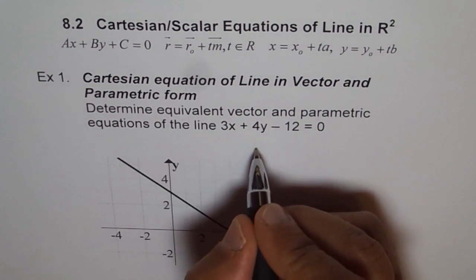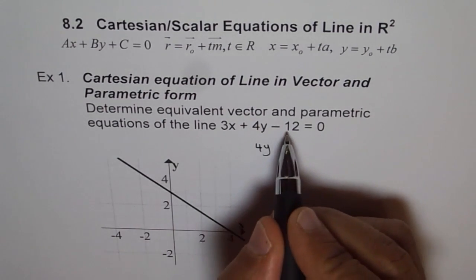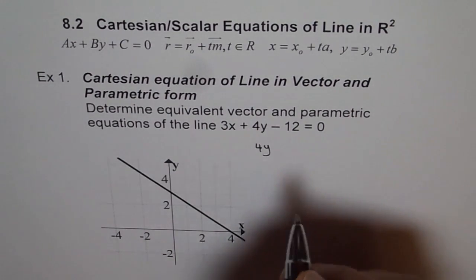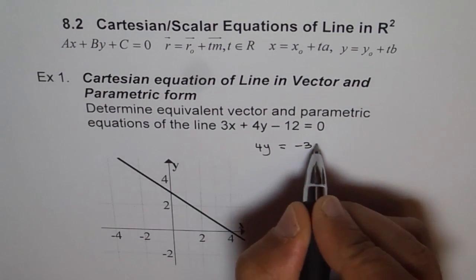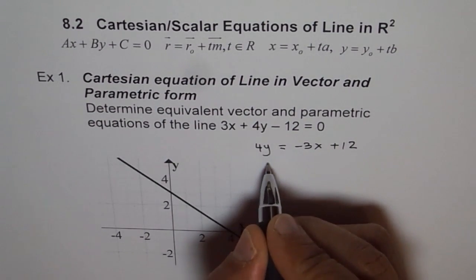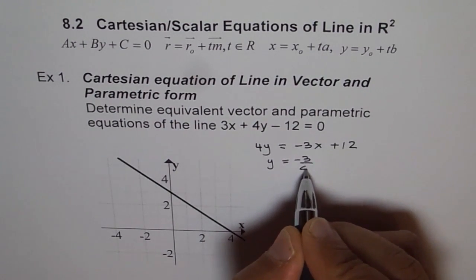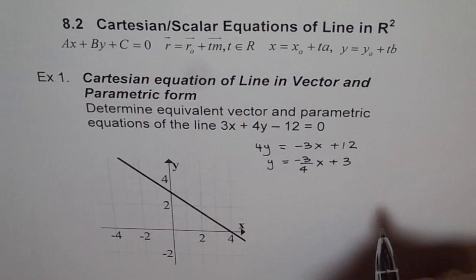So 4Y equals to, in this equation we will take 3X on the other side, 12 on the other side and write it in Y equals to MX plus B form. So we can write 4Y is equals to minus 3X plus 12. And if we divide by 4, we get Y equals to minus 3 over 4X plus 3.